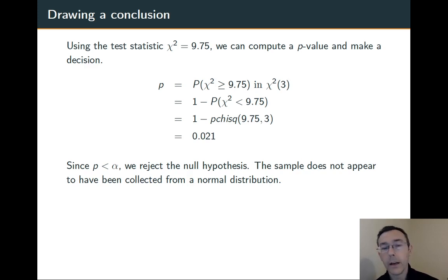In R, the code is pchisq(9.75, 3). Overall, we get 0.021. That's less than our alpha value, so we reject the null hypothesis and conclude that the data does not appear to have been collected from a normal distribution.